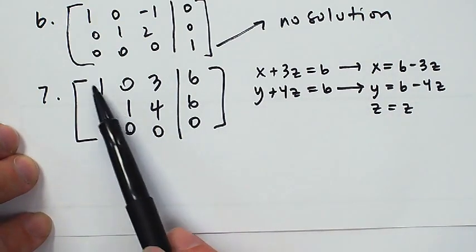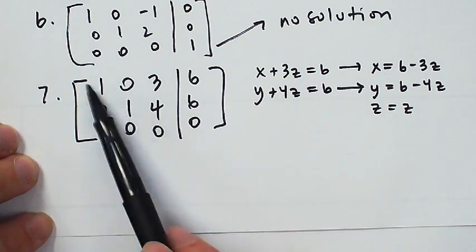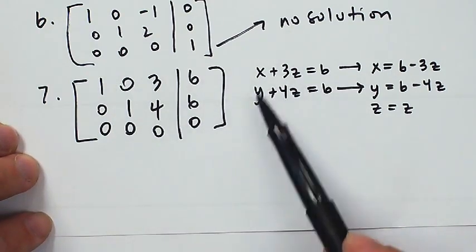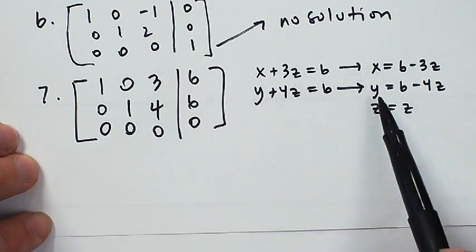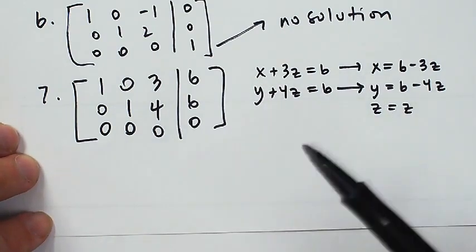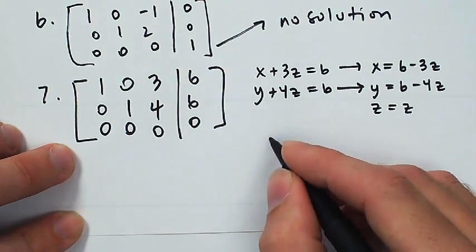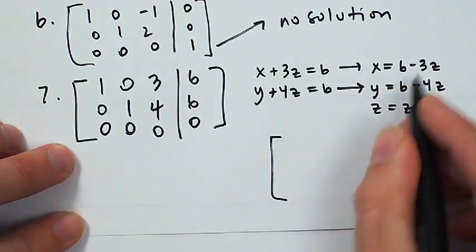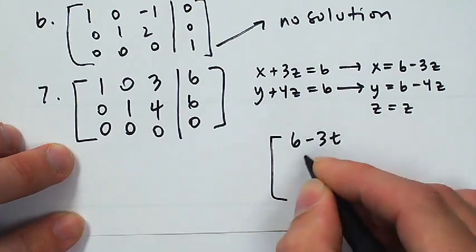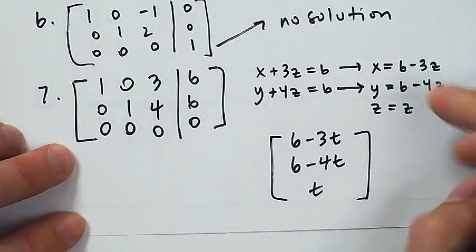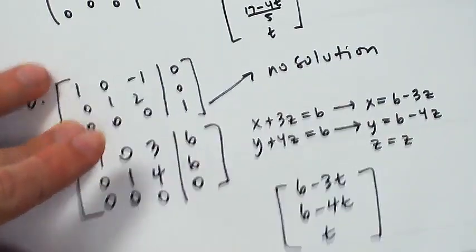So: x + 3z = 6, meaning x = 6 − 3z; and y + 4z = 6, meaning y = 6 − 4z. Z can be whatever it wants. Because of the way technology reduces the matrix, z will always be the independent variable — the leading ones, called pivots, correspond to x and y as dependent variables. As a vector formula for a line in space: (6 − 3t, 6 − 4t, t). Either form is acceptable.